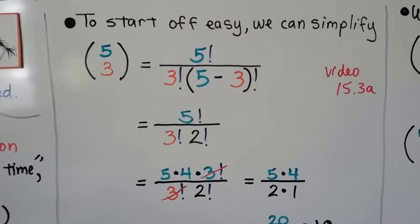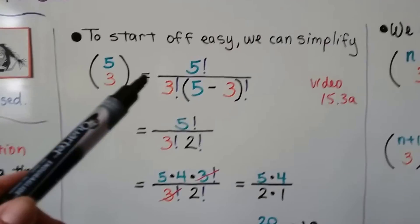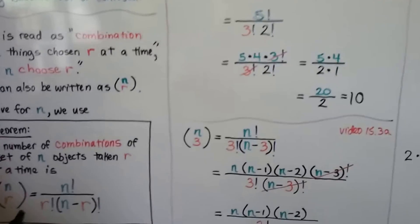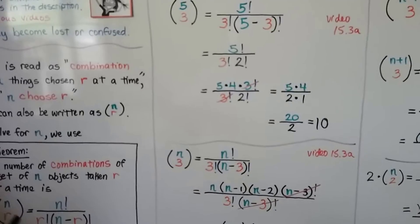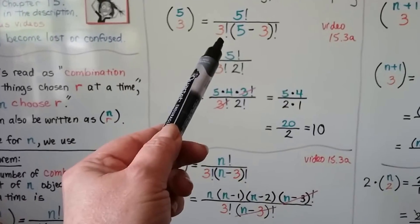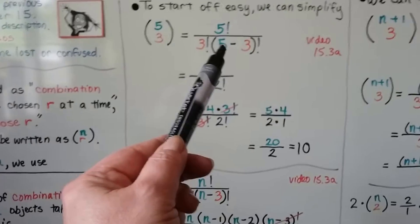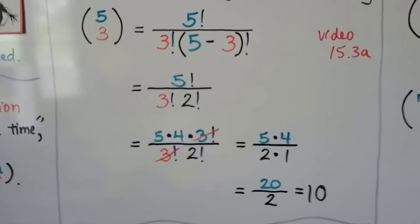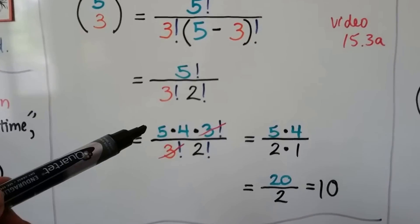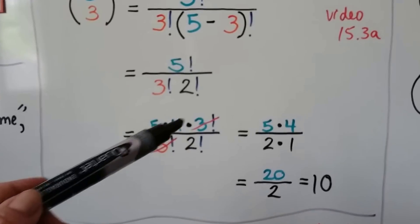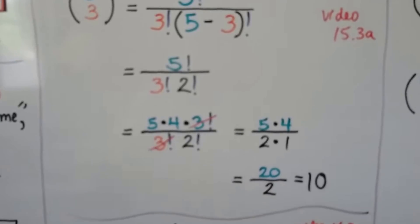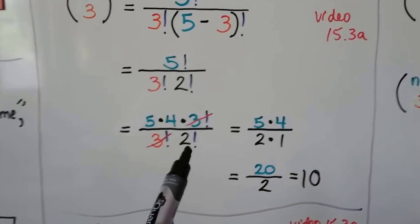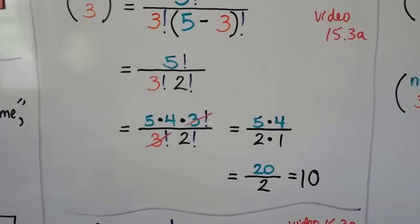To start off easy, we can simplify 5 choose 3. We write 5 factorial divided by 3 factorial — that's the r, so we have 3 factorial. Then we do n minus r, which is 5 minus 3, giving us 2 factorial. We can write 5 factorial with a factor of 3 factorial: 5 times 4 times 3 factorial. We cancel them out as common factorials, leaving 5 times 4 over 2 times 1. That's 20 divided by 2, which is 10.